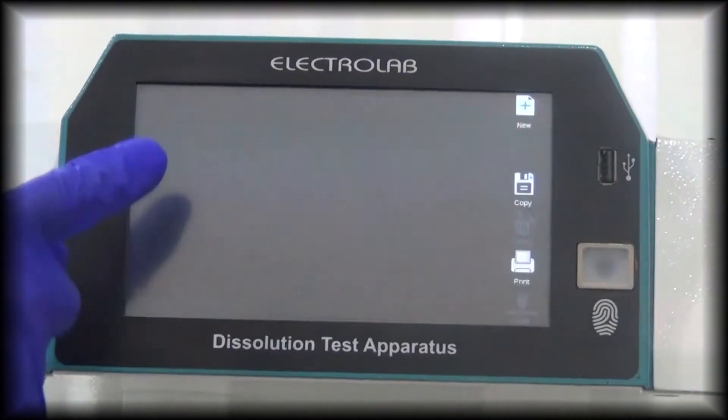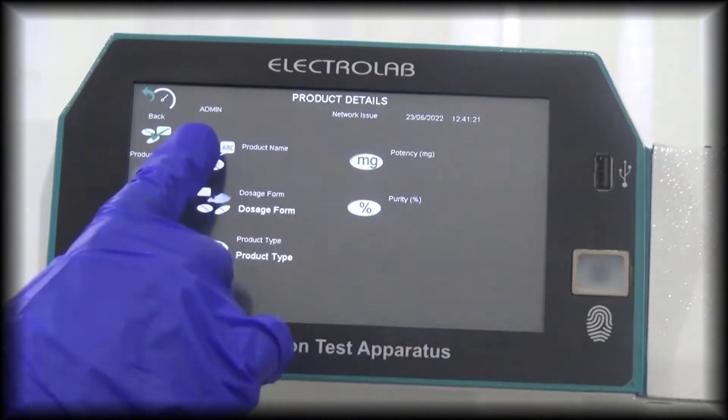To run a test protocol, go to the product icon, add product details, and set the dissolution conditions.